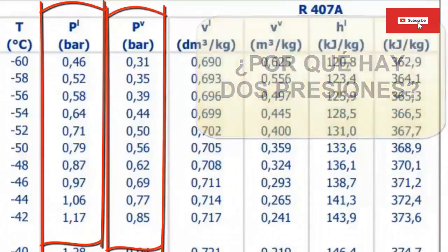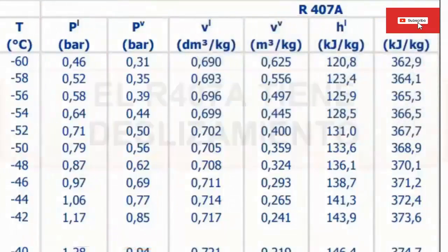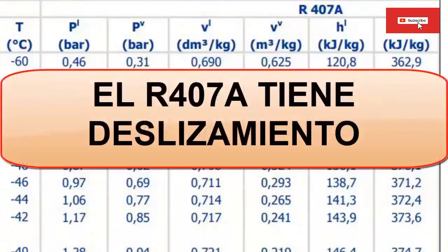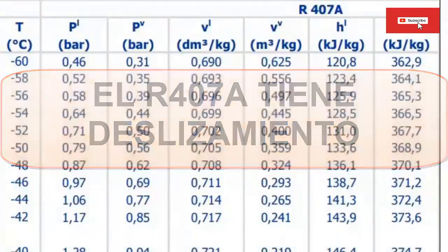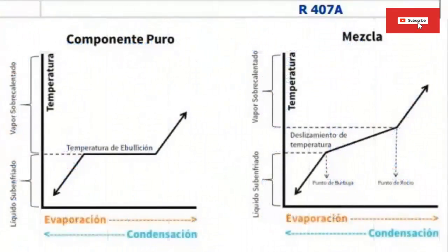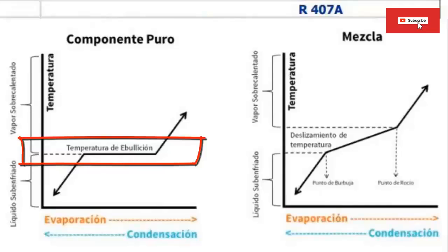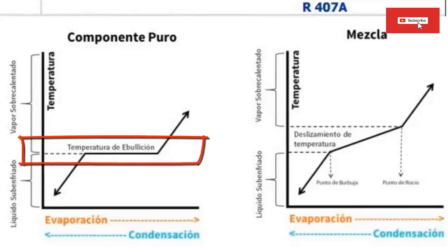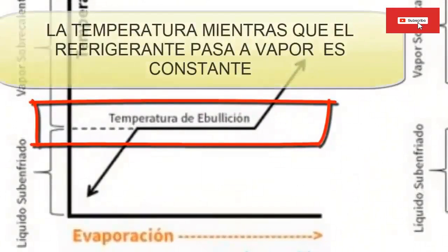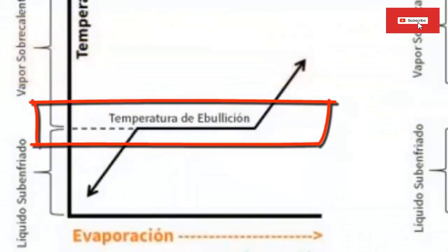This slippage means that the temperature of R407A in its transformation from liquid to vapor, or from vapor to liquid, does not remain constant. For pure refrigerants like R22, R32, or R134A, we only see one point where a vapor starts to change to a liquid state or a liquid starts to change to a vapor. While the change of state occurs, the temperature remains constant.